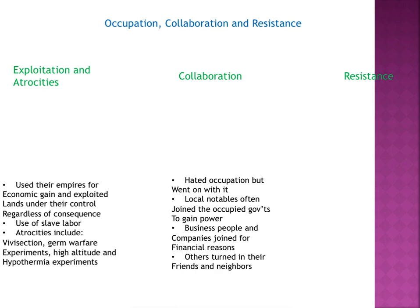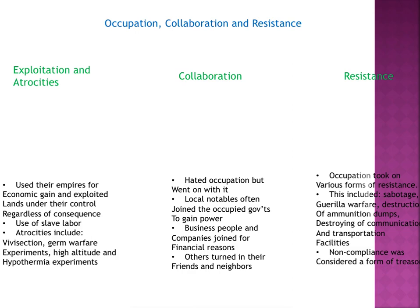Business people and companies joined for financial reasons — they saw the profit even though they knew they were part of murder. Others turned in their friends and neighbors to avoid being caught. There were some forms of resistance: sabotage of factories, guerrilla warfare, destruction of ammunition dumps, destroying communication and transportation. These small acts of resistance were similar to sabotage in the encomiendas. Noncompliance was another form of resistance, considered treason. These attempts proved very futile in nature, but they did exist.